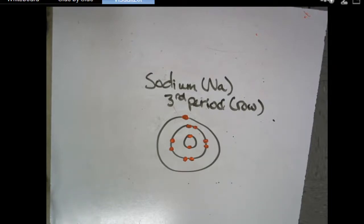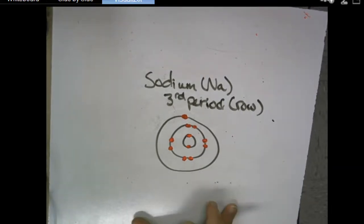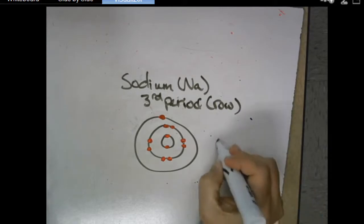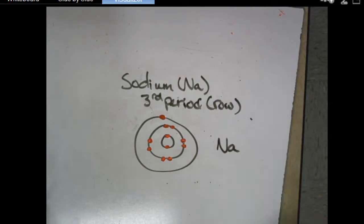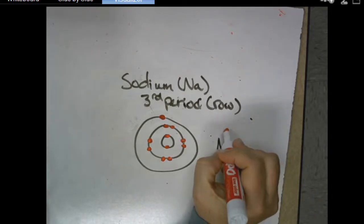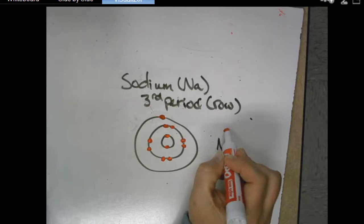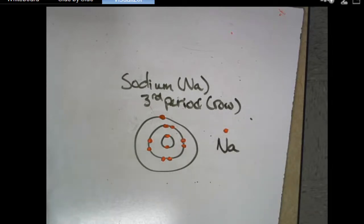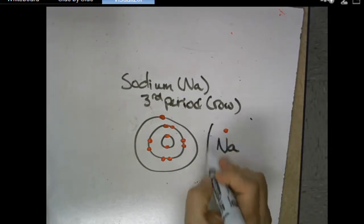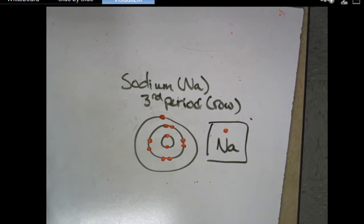So if I'm going to write the Lewis structure, the first thing I'm going to do is I'm going to write the symbol, which is Na. And then I'm going to put my valence electrons on there for my Lewis, and it just has one. I always start at the top. I go north and then go counterclockwise and then fill up with two, but it only has one. So there's sodium. This is the Lewis structure for sodium. That's it. So that should be what's on your paper.